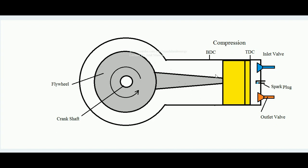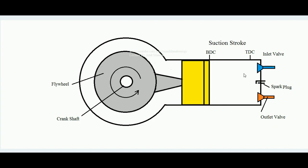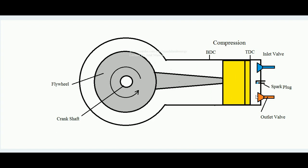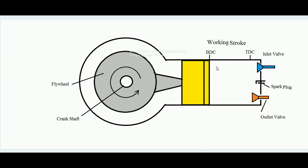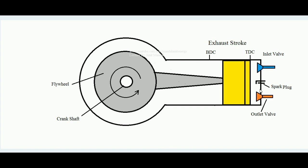In the compression stroke, the charge sucked inside is compressed. Then a spark is introduced, the charge ignites, developing high pressure inside the cylinder. This creates a push over the piston, converting into the working stroke. At the end of the working stroke, the piston is at BDC, the outlet valve opens, and all the burnt gases are expelled out.